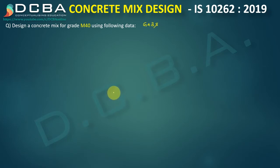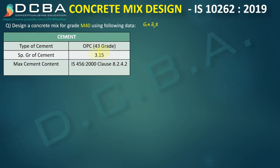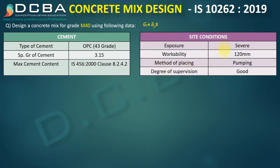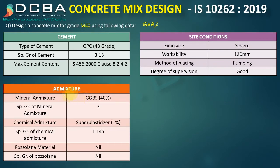The type of cement given is 43 grade OPC, specific gravity 3.15. Maximum cement content is given from IS456. Site conditions: exposure is severe, workability is 120 mm because the method of placing is pumping, degree of supervision on site is good. The mineral admixture we are using is GGBS at 40% of the total cementitious content. Specific gravity of GGBS is 3.